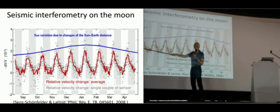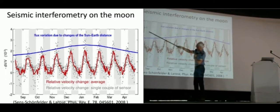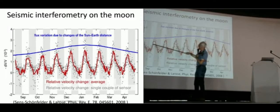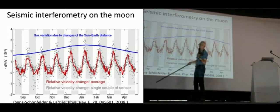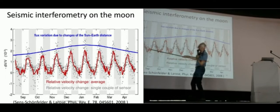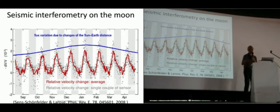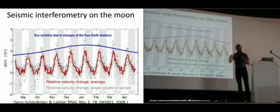During the lunar day the velocity goes down — this is my only criticism of this paper, Christoph: why the minus sign? It confuses everything, but it's a gorgeous study. During the lunar day the velocity goes down because the soil heats up, and if you increase the temperature it becomes less stiff, so the velocity goes down.